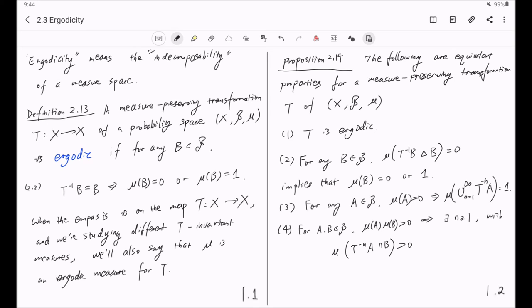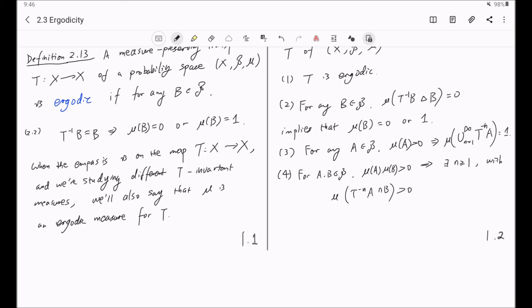Now all those four properties are about sets. The last one is about functions. Now five. For f from x to c, a measurable function. So if we have f composed of T is equal to f almost everywhere, then we will have f is equal to a constant almost everywhere. And this says, under the ergodic condition, there will be impossible to have a non-constant T invariant function, which should be natural to you.